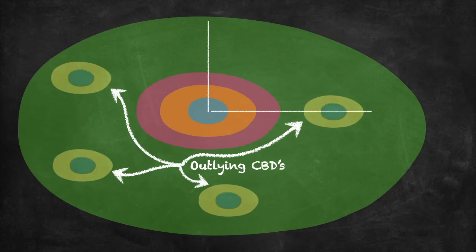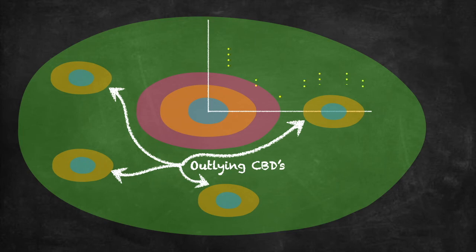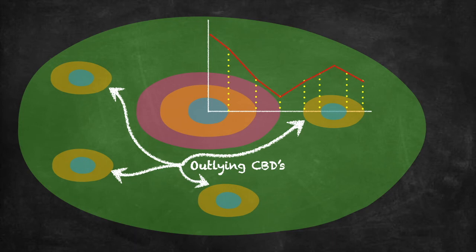However, modern cities don't look this simple. In a modern city, we have a number of outlying CBDs — not just one. As the city grows and sprawls, it encompasses other CBDs. We then get peak land value intersections at certain points. Instead of a simple bid-rent curve, we get quite a complicated curve: land value decreases from the main CBD toward the residential area, but as you reach outlying CBDs, the land value peaks and then drops again as you move away from those outlying CBDs.